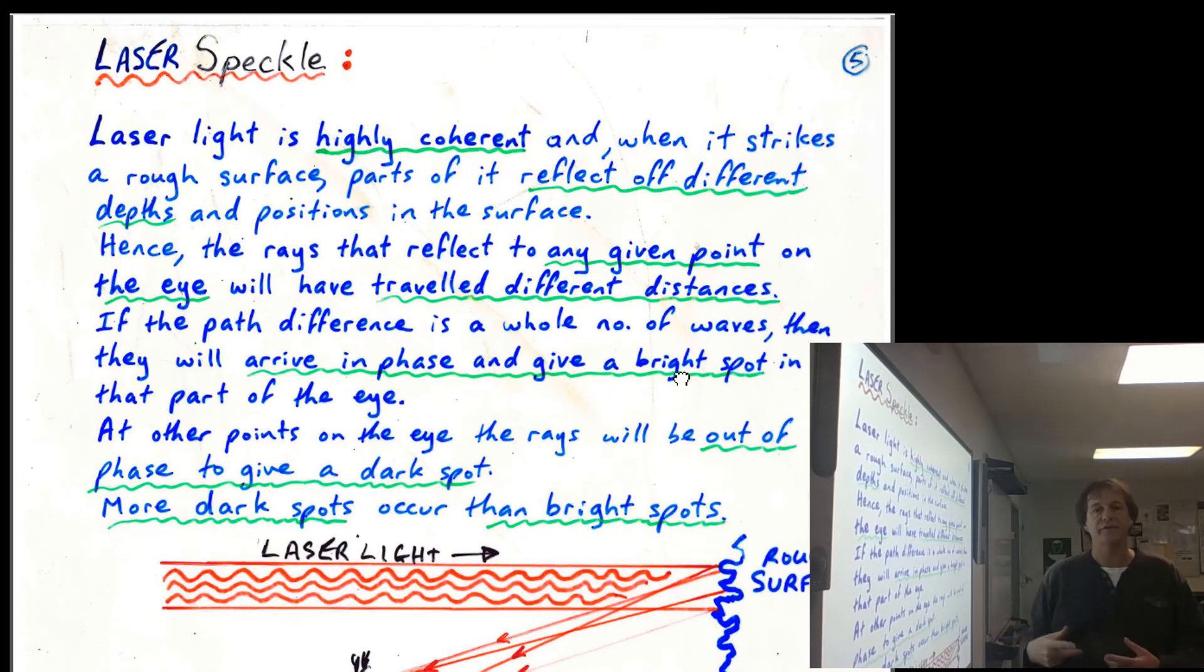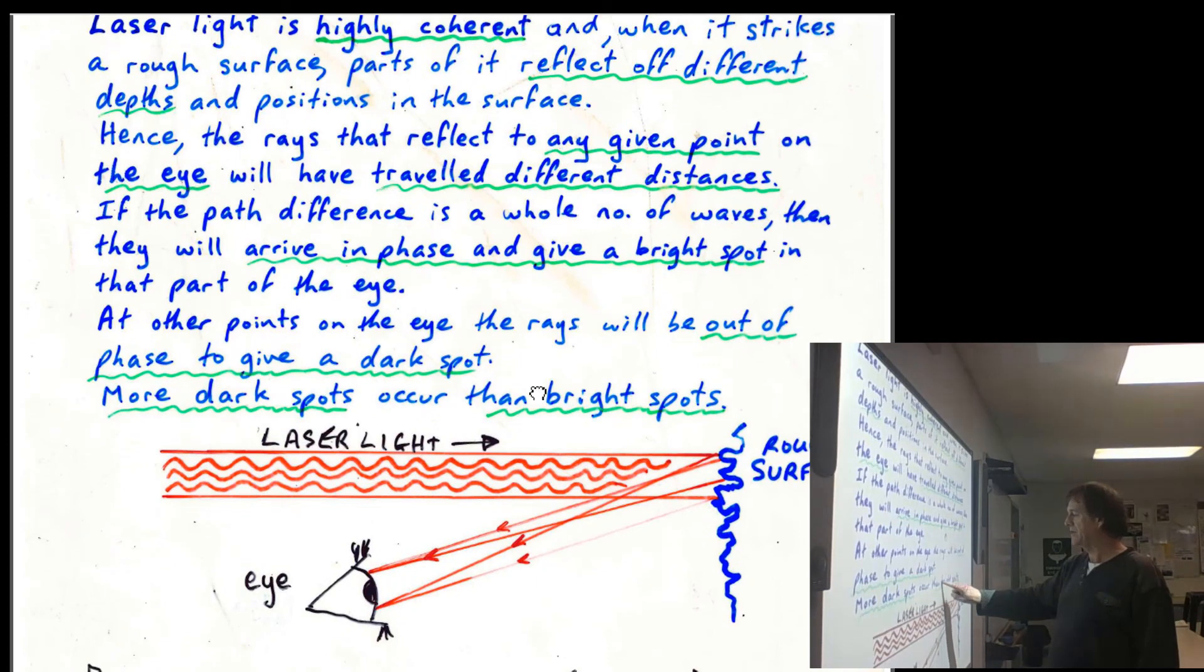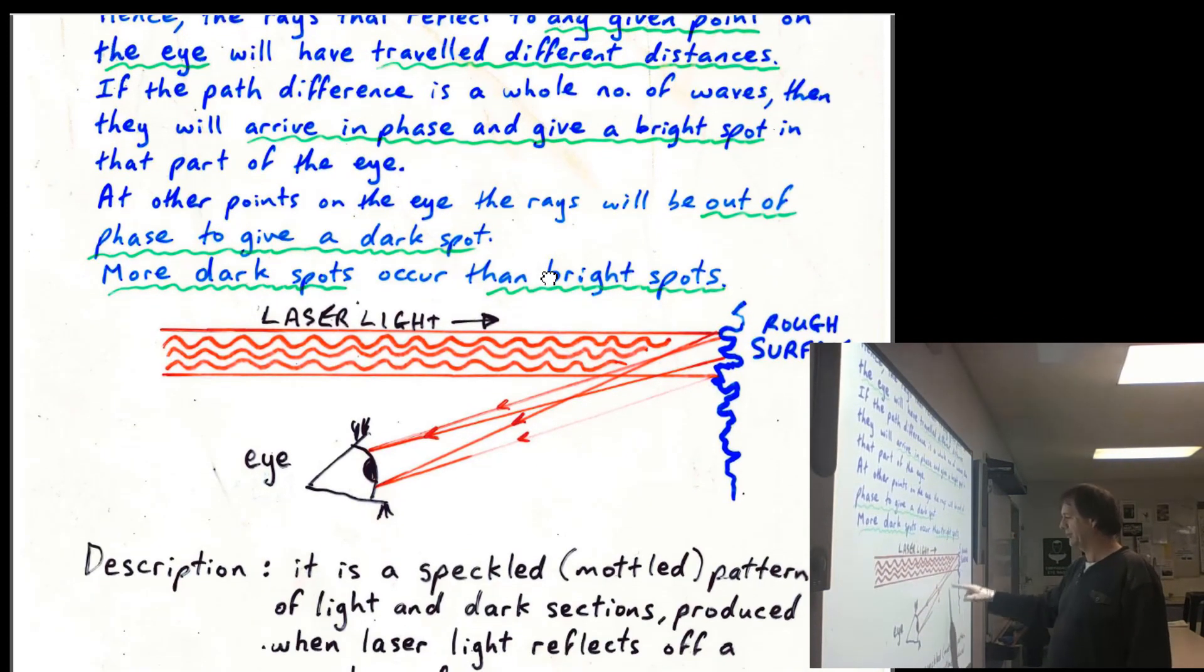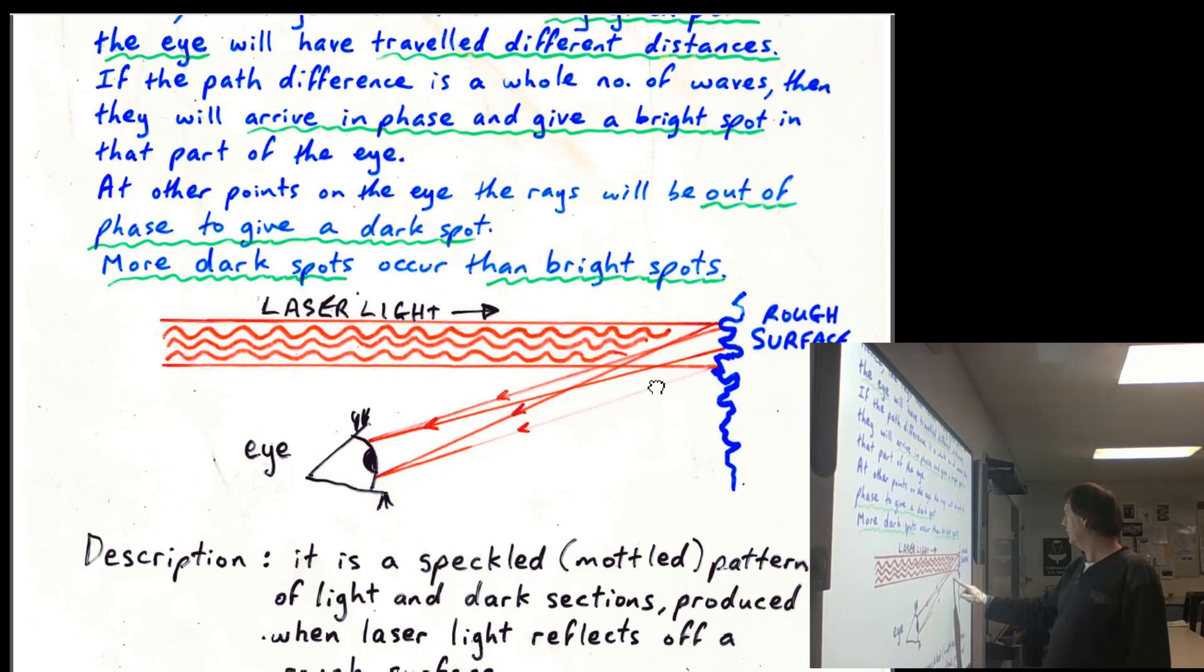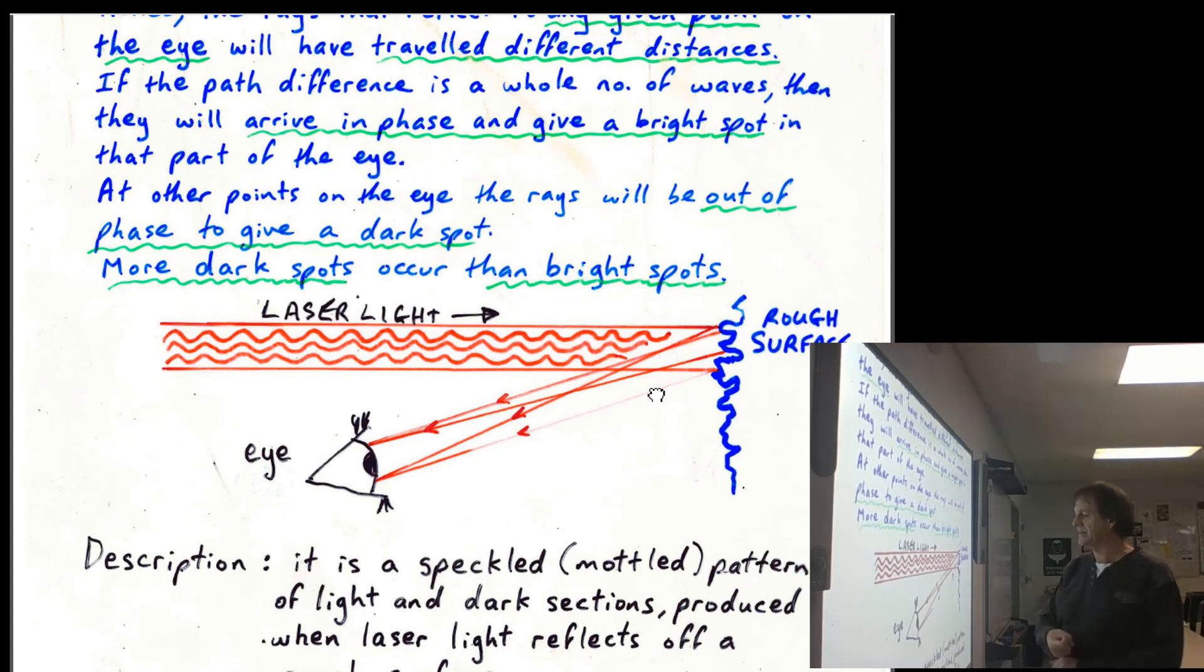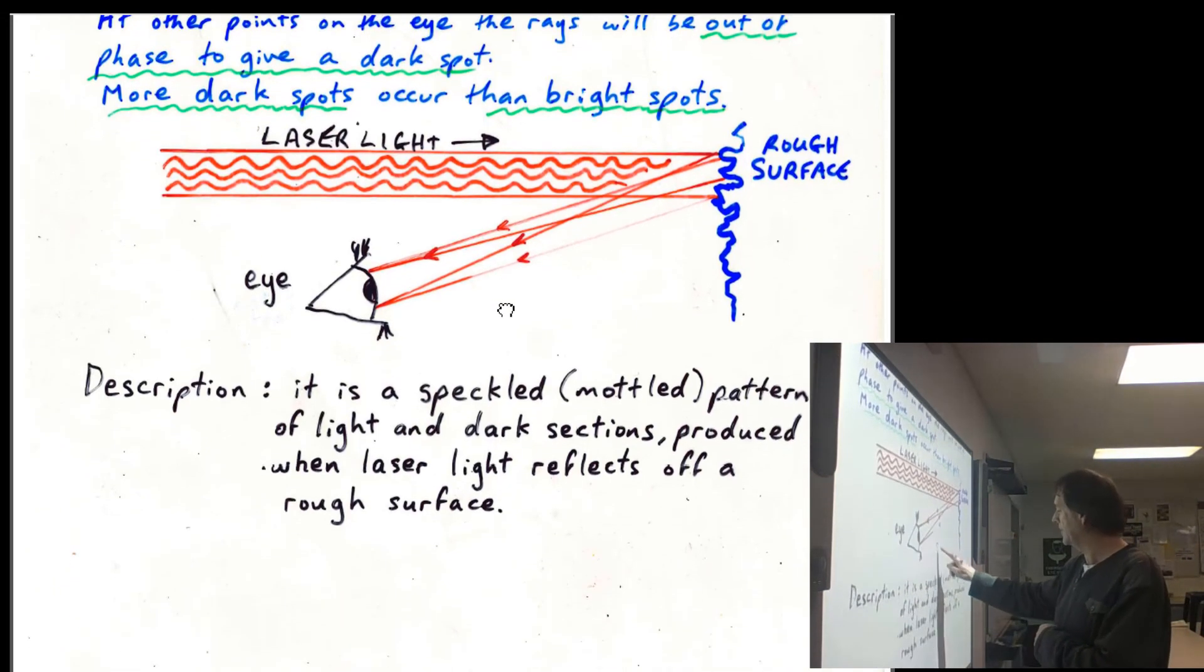If it's arriving out of phase and gives you a half wavelength path difference, it's going to cancel out and give you destructive interference, and therefore you'll get a dark spot. And that means you get a mottled pattern of red and black spots on your eye there. So it's due to a path difference. Because the light's highly coherent, you will get constructive and destructive interference at the different spots on the eyes. And you should be able to describe that pattern as well.